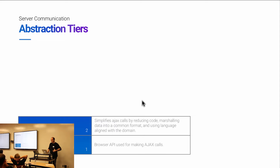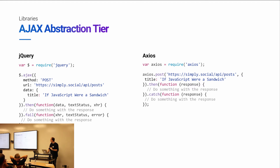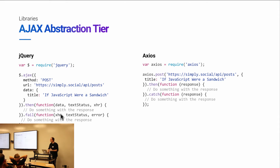On top of that, we build Ajax abstraction tiers. Examples are libraries like jQuery or Axios — they take that complexity and simplify it. With jQuery you can just say: I need to make an Ajax call, it's a POST request, here's the endpoint, here's the data I want to send, and when you're done give me the data and I'll do something with it. Much more human friendly.